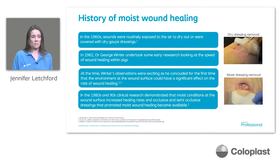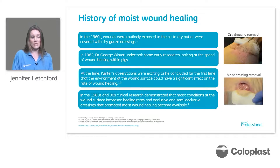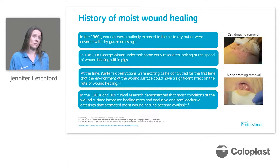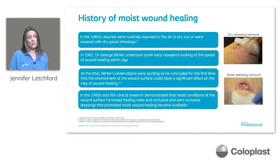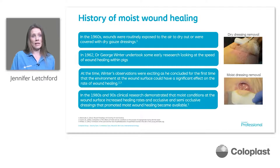Looking at the history of moist wound healing: in 1962, George Winter undertook early research looking at the speed of healing, using pigs and pig skin wounds. In the early 1960s, wounds were routinely exposed to the air to dry them out or covered with dry gauze dressing. Winter's research was absolutely crucial and has helped with our development of products up until today. His observations were really exciting, and he concluded for the first time that the moist wound environment had a significant impact on the healing trajectory of wounds.